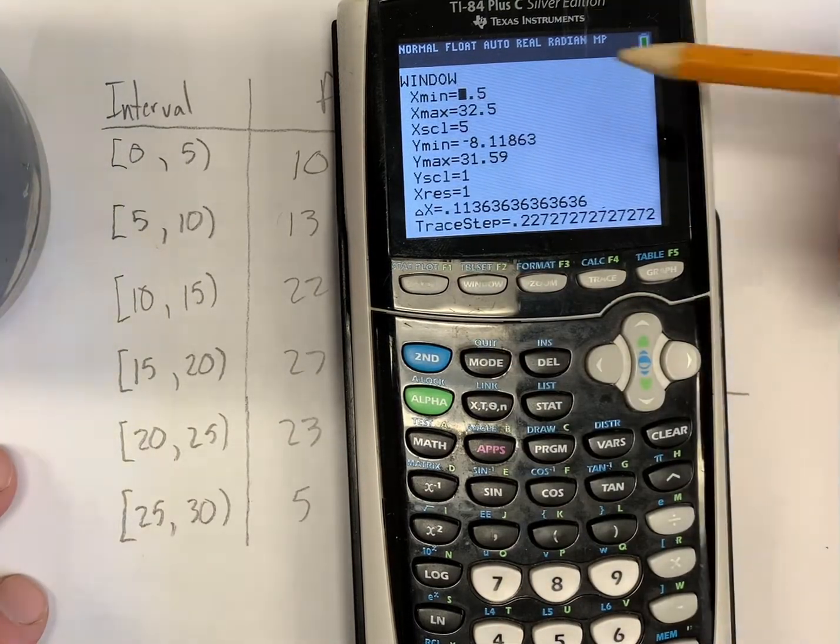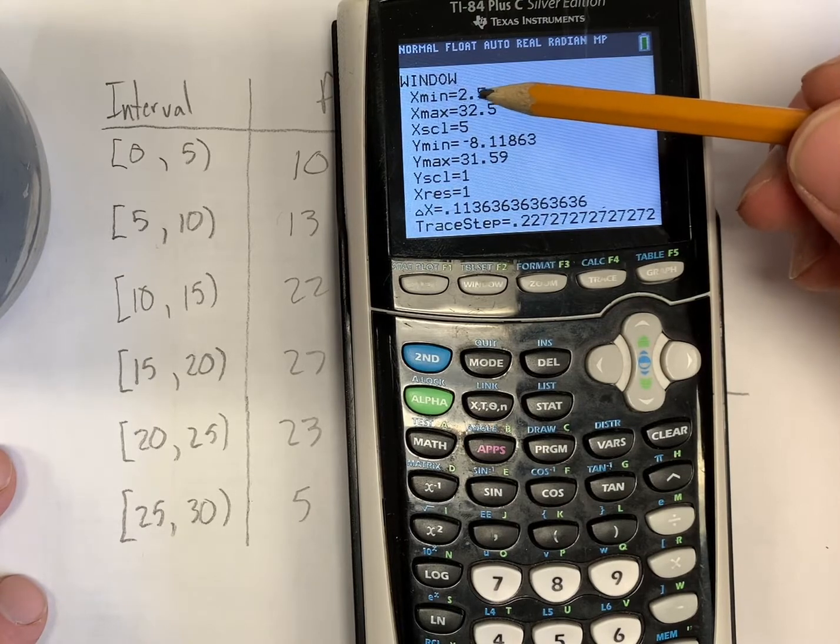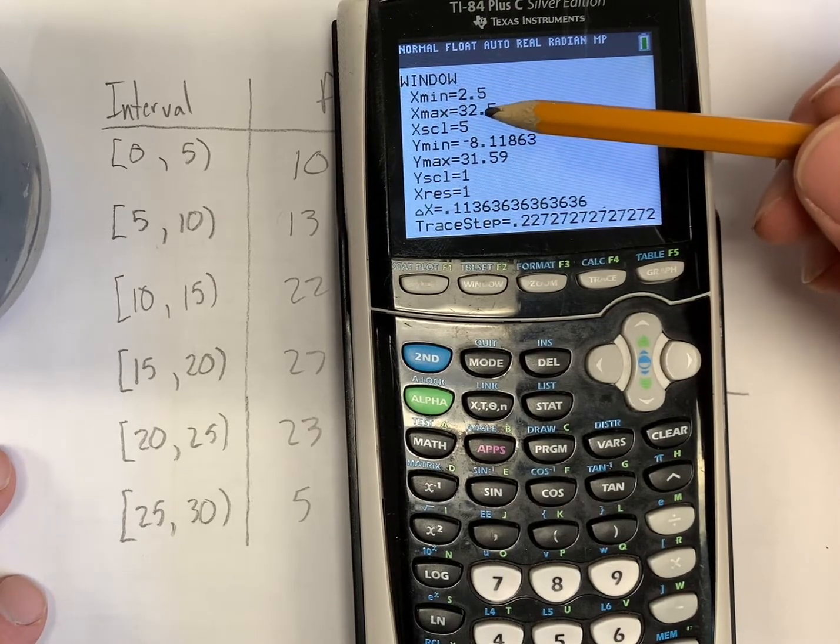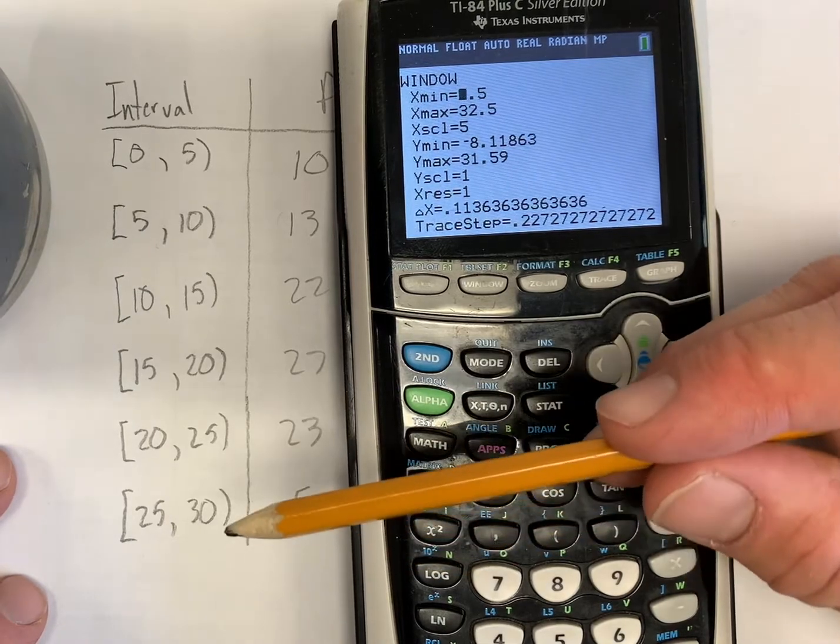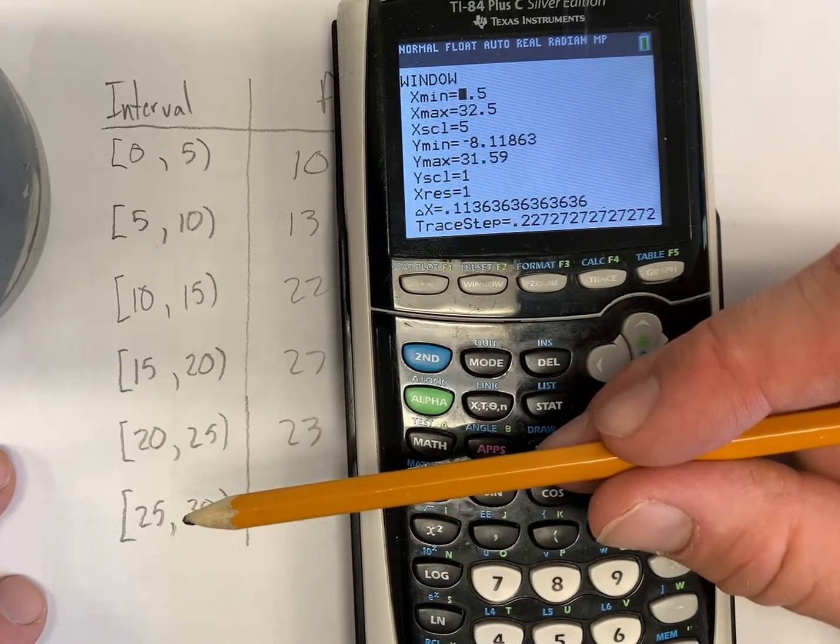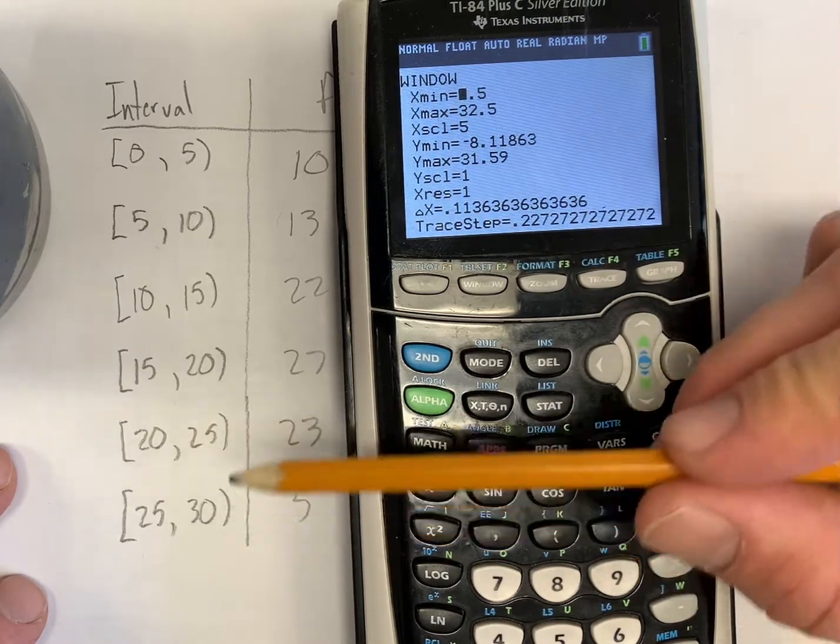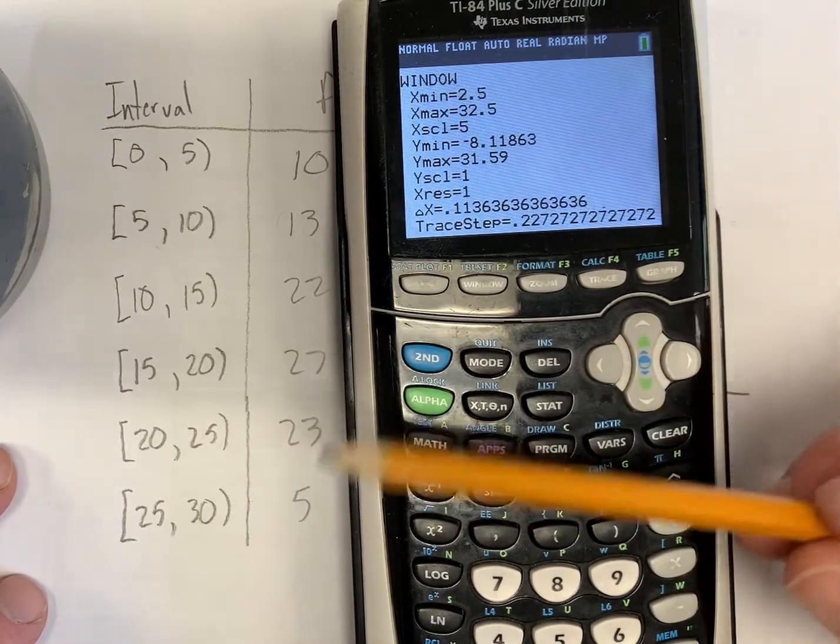We go to window, we set the minimum as our bottom or sorry, as our first mid-interval value. And we set the maximum as the next mid-interval value. So not 27.5, but as 32.5, the one just above. And that's that way we can get all the way up to that range of 30.